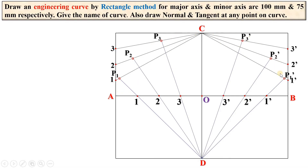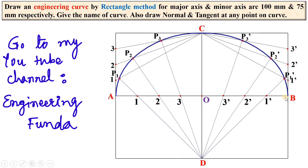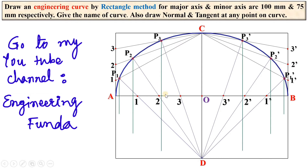Now join all the points by a smooth curve. Keep in mind your smooth curve must pass through points A, C, and B, as these are the vertices of the ellipse. So far, this gives the upper half of the ellipse. For the lower portion, you can use a shortcut in the examination to save time. Draw vertical lines passing through P1, P2, P3 and similarly P3 dash, P2 dash, P1 dash.